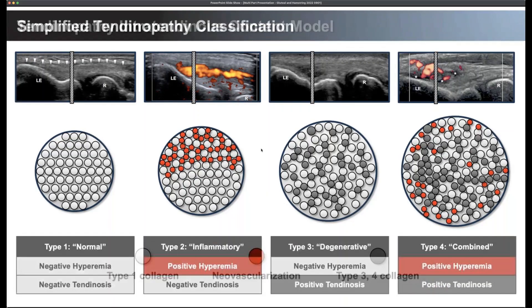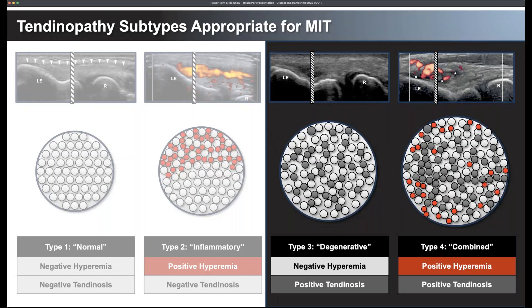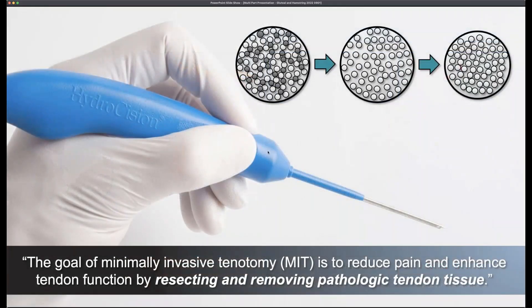One treatment we feel is beneficial for type 3 and type 4, where tendinosis is predominant, is minimally invasive tenotomy. The role of that is using the TENJET device to debride, resect, and remove this degenerative tendon tissue to reduce pain and enhance tendon function. If you remove this degenerative tendon tissue, the hope — and what we've been able to see under ultrasound through thousands of cases — is re-approximation of type 1 fibers into a more functional tendon. We believe this is the reason why patients' pain and function is improved after minimally invasive tenotomy: direct resection and removal of the tendinosis, allowing and returning normal function.